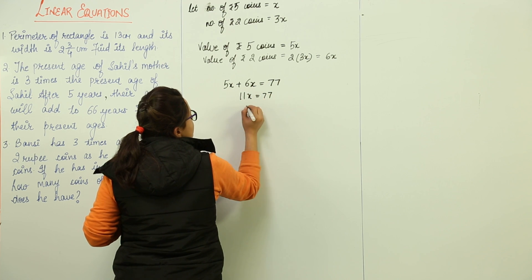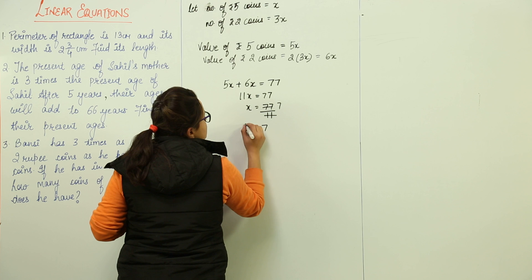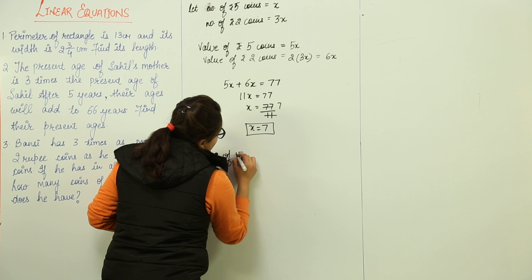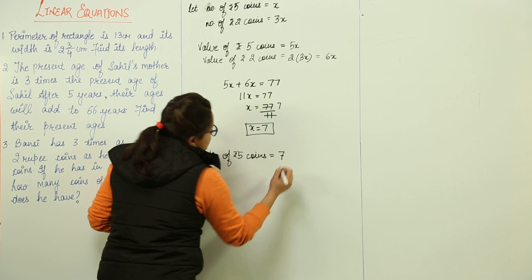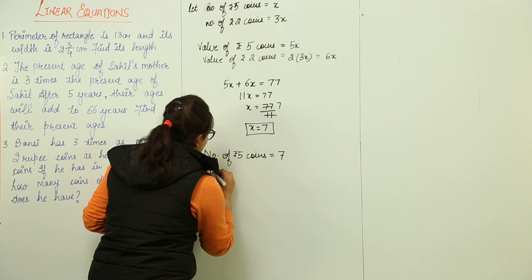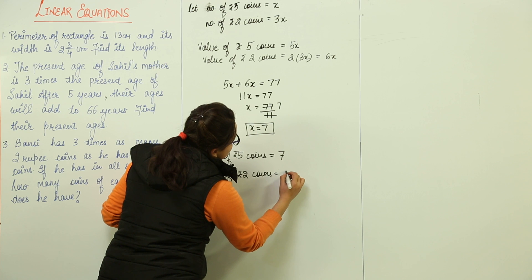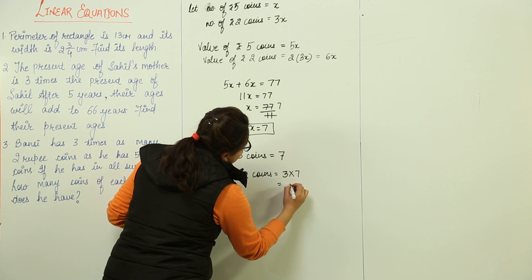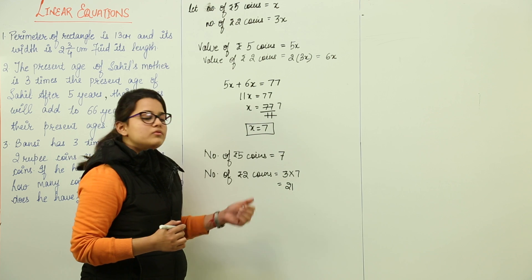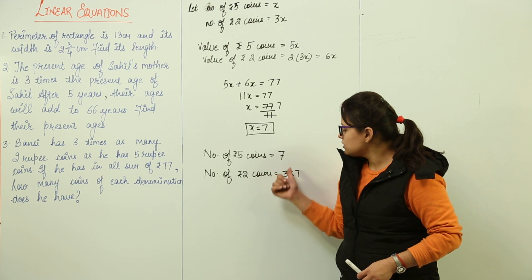They add up to 77, so 11X equals 77. X is equal to 77 over 11, so X becomes seven. That means I have seven coins of five rupees. For two rupee coins, I had assumed three X, so I multiply seven by three, which is 21. That means I have seven coins of five rupees and 21 coins of two rupees. We have found how many coins of each denomination we have.